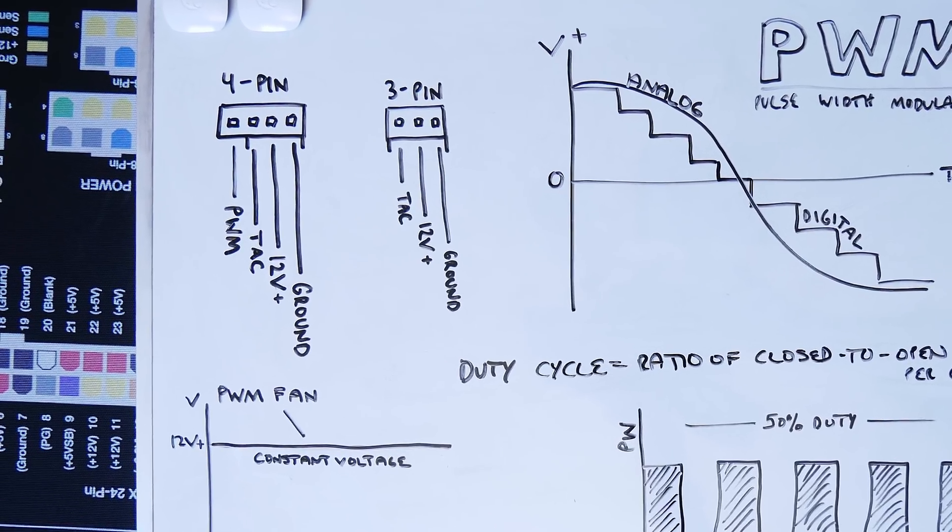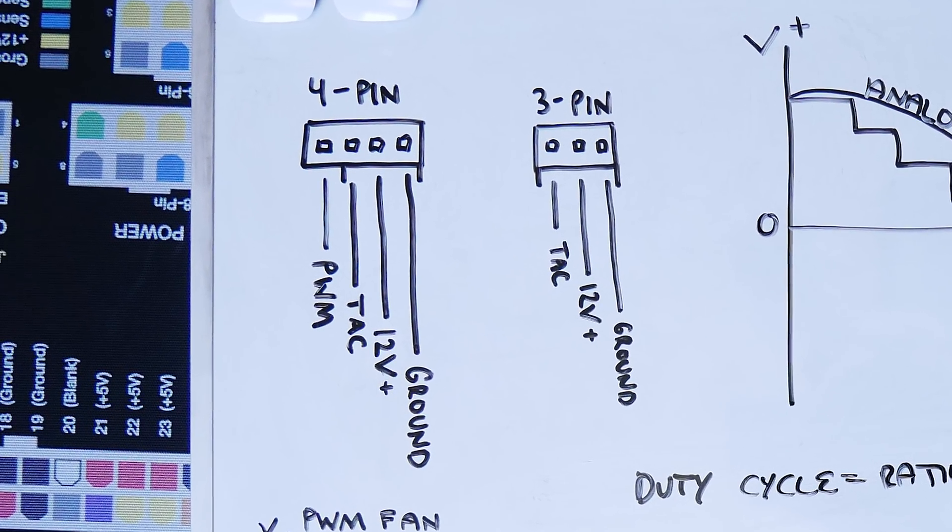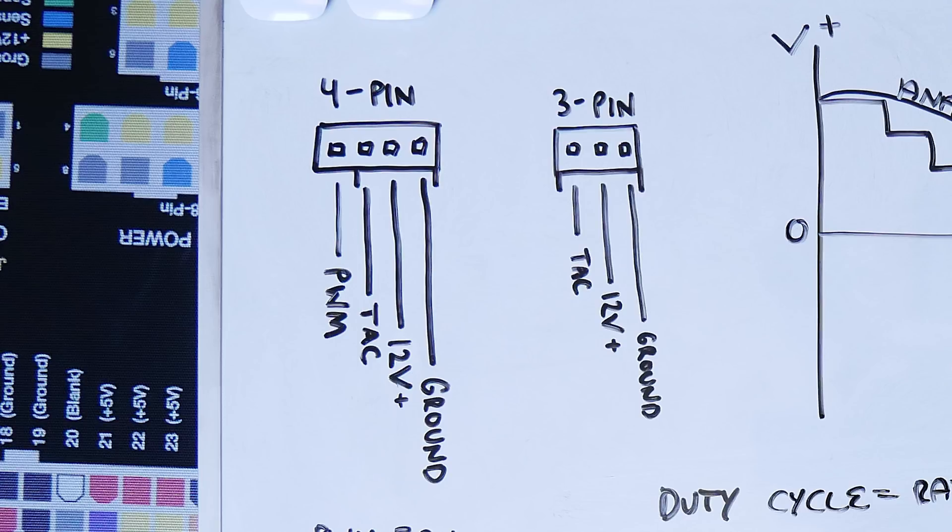But Pulse Width fans are a different story. Rather than varying voltage down the second line, voltage is fixed with the fourth pin active. So this fourth pin actually controls signal duration, or the Pulse Width, and you see now where the name comes into play.